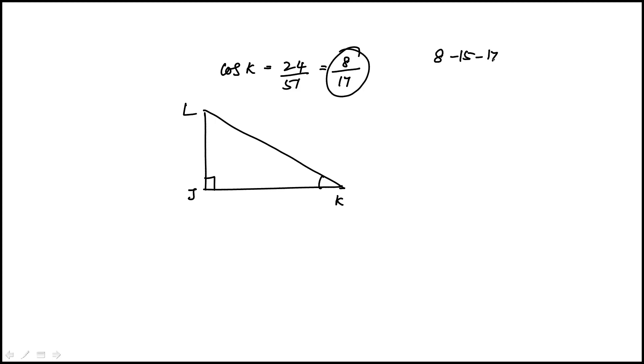the 8, 15, 17, which means cosine K is 8 over 17. So that would be 8, hypotenuse of 17, again not drawn to scale. This would be 15.